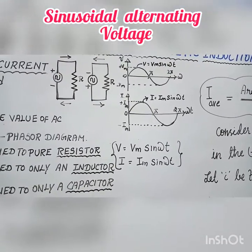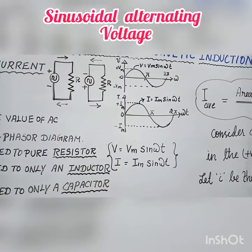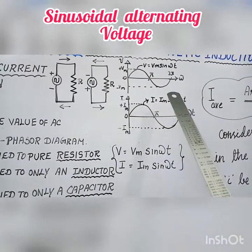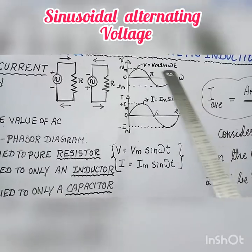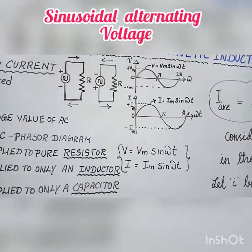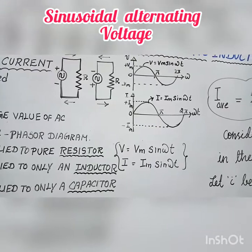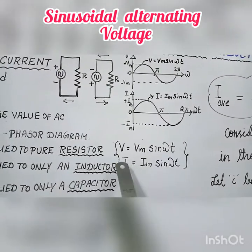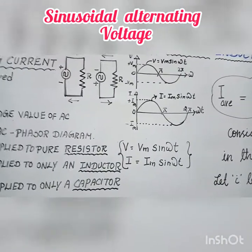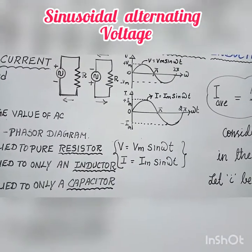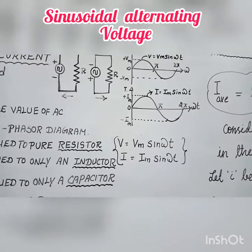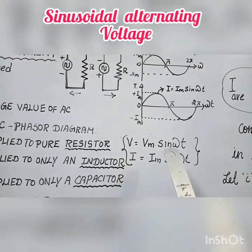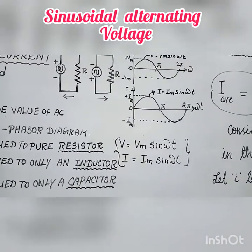Sinusoidal alternating voltage: if the waveform of the alternating voltage is a sine wave — from 0 to 90, 90 to 180 — this is a sine wave. The sinusoidal alternating voltage is given by the relation: V = Vm sin(ωt), where V is the value of alternating voltage, Vm is the maximum value or amplitude, ω is the angular frequency, and t is the time.